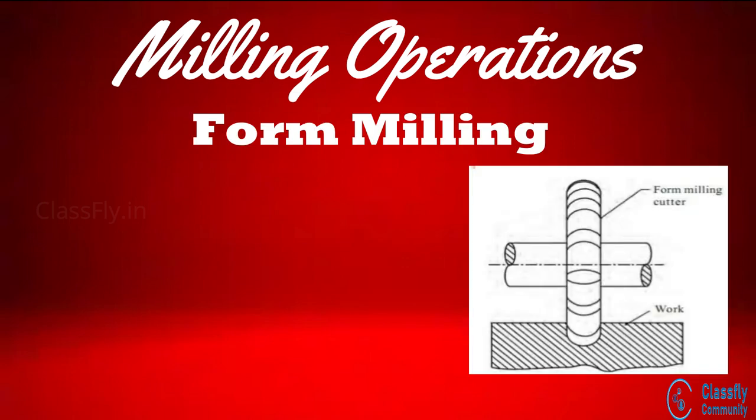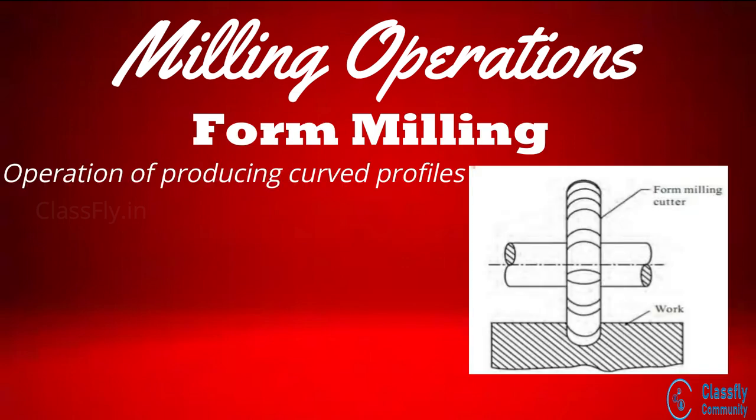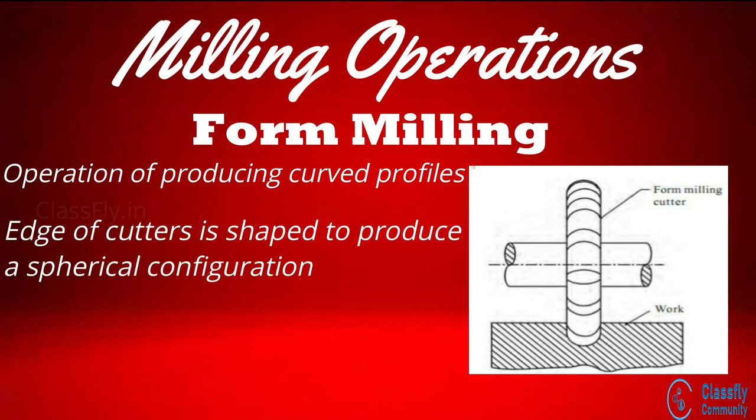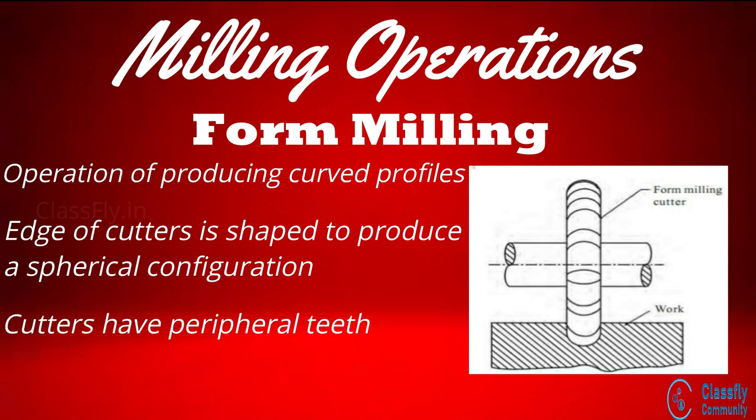Form milling is the operation of producing curved profiles with a variety of shapes such as concave, convex, spline, etc. This is done using cutters whose edge is shaped to produce a spherical configuration. This cutter is known as a form mill and has its teeth on the periphery.